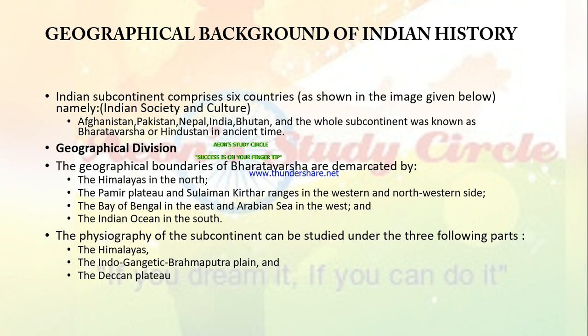Geographical background of Indian history. The Indian subcontinent comprises six countries: Afghanistan, Pakistan, Nepal, India, Bhutan and Sri Lanka, also known as Bharatavarsha or Hindustan in ancient times. The geographical boundaries of Bharatavarsha are demarcated by the Himalayas in the north, the Pamir Plateau and Sulaiman-Kirthar Ridge in the west and northwest, the Bay of Bengal in the east, the Arabian Sea in the west, and the Indian Ocean in the south.